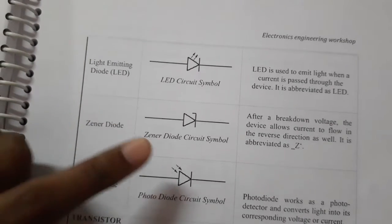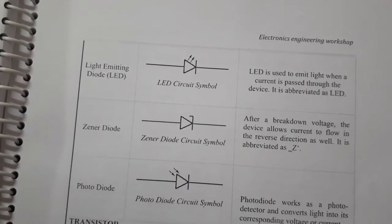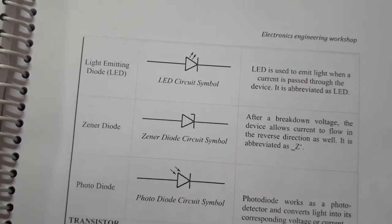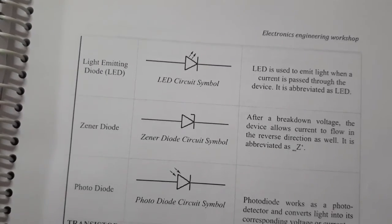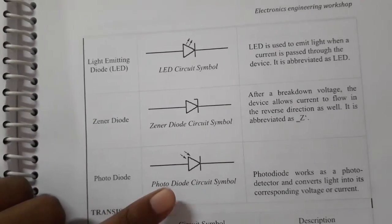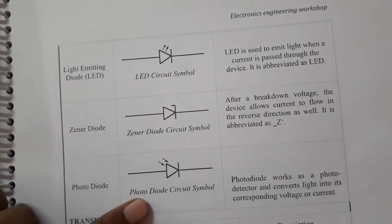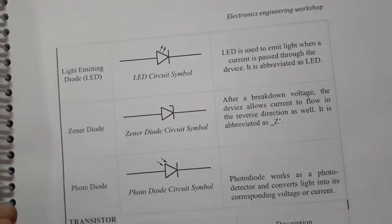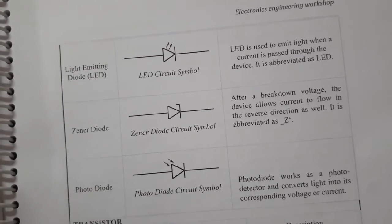Next is the Zener diode — this is the circuit symbol. After the breakdown voltage, the Zener diode allows current to flow in the reverse direction. Next is the photodiode — this is the symbol. A photodiode works as a photo detector, converting light into a corresponding voltage or current.